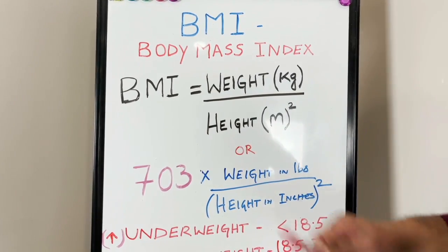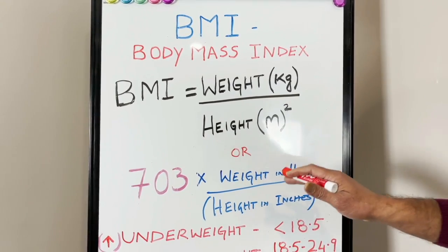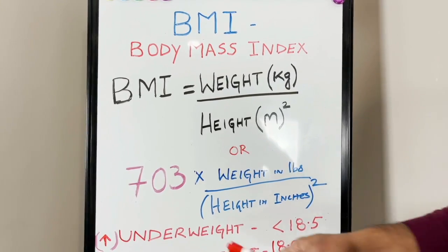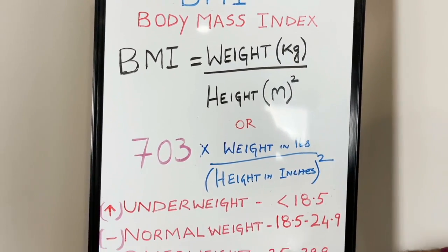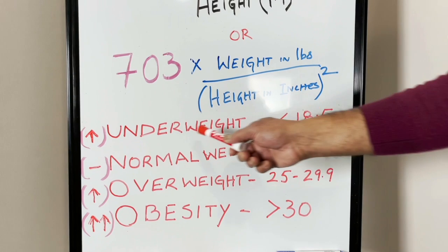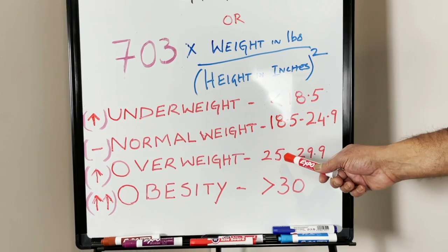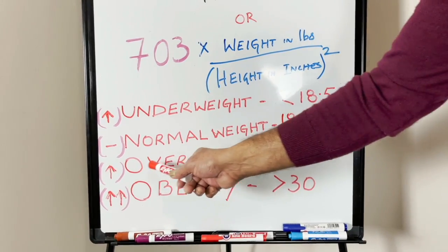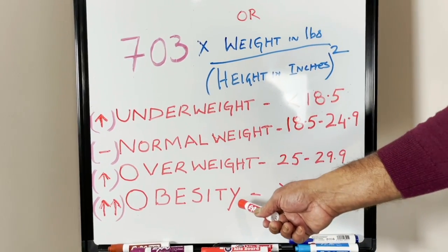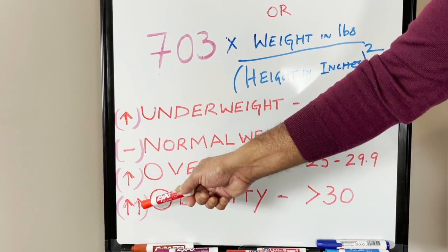Once you get this number — whether you plug in pounds or kilograms — it tells you where you fit in. A BMI of 18.5 or less is underweight. Between 18.5 and 24.9 is normal weight, which everybody wants to be in. From 25 to 29.9 is overweight, and anything above 30 is classified as obesity.